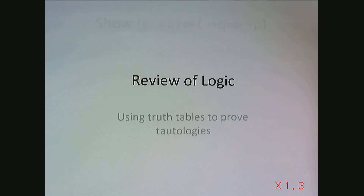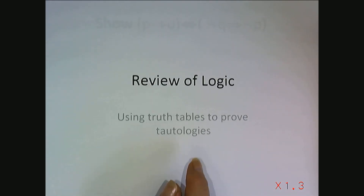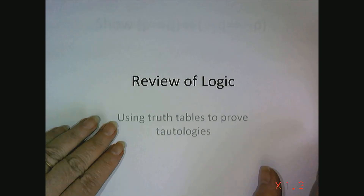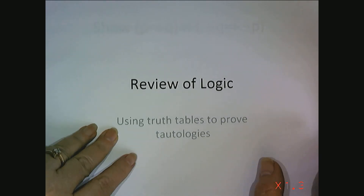A truth table summarizes truth values for all combinations of truth values of components. In this video we want to use truth tables to prove tautologies. Recall tautologies are predicates that no matter the input variable, the value of the predicate will always be true. So let's look at some examples.